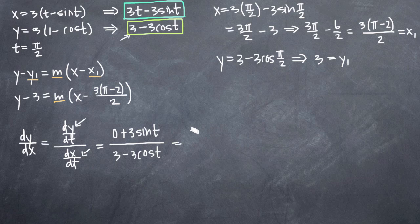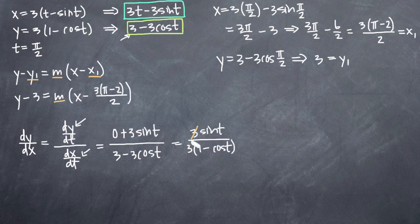When we simplify, we see that in our numerator we get 3 sine t, and in our denominator we can factor out a 3 to get 3 times (1 minus cosine t). The 3s cancel, so our simplified derivative is sine t divided by (1 minus cosine t).